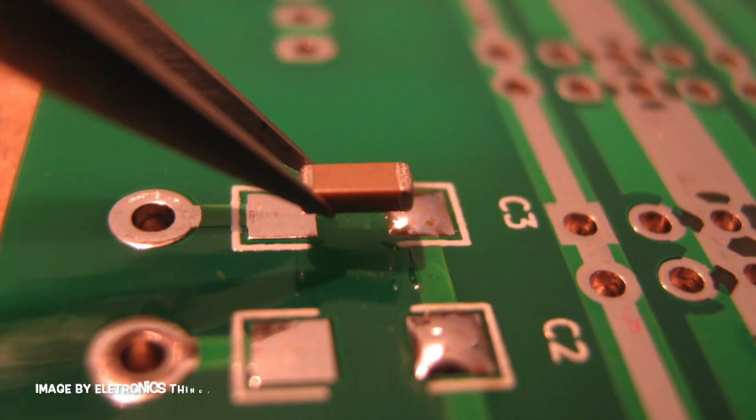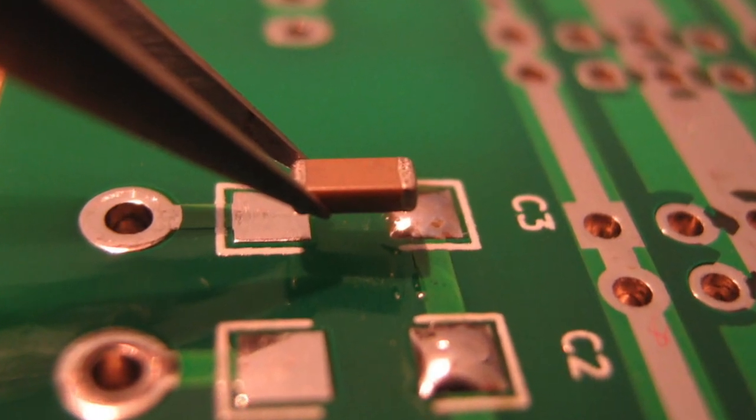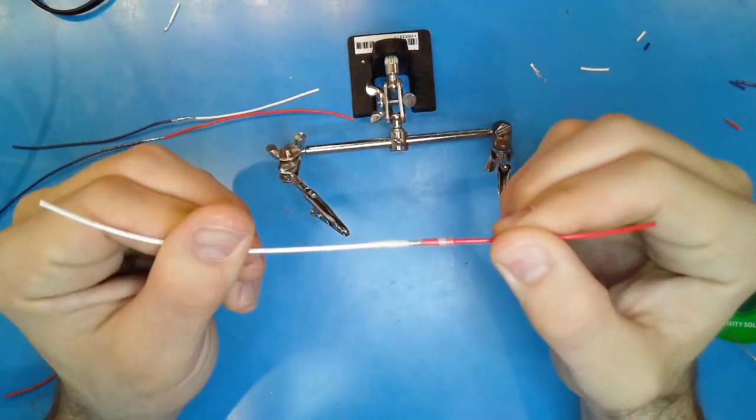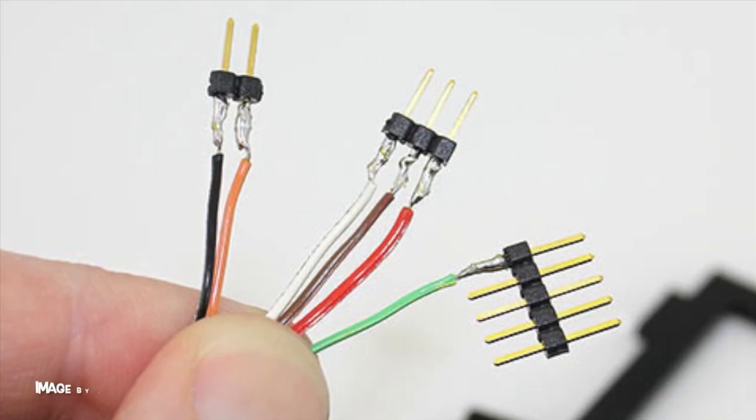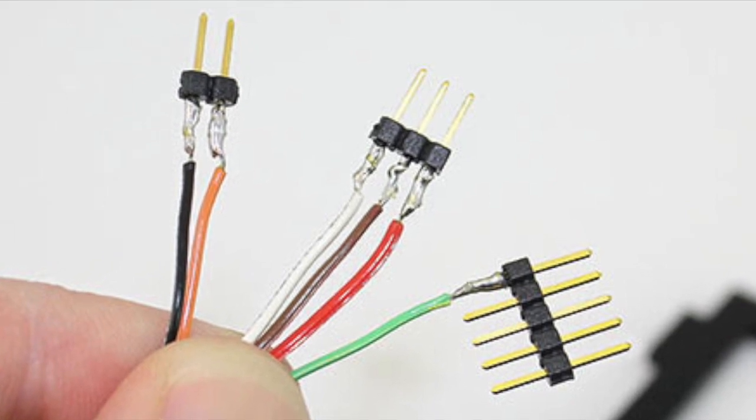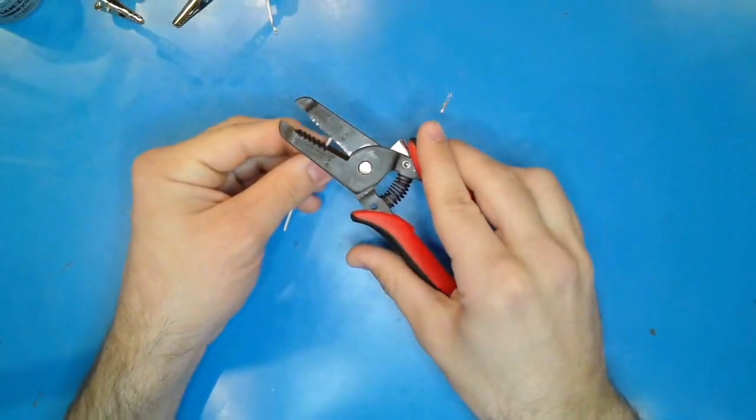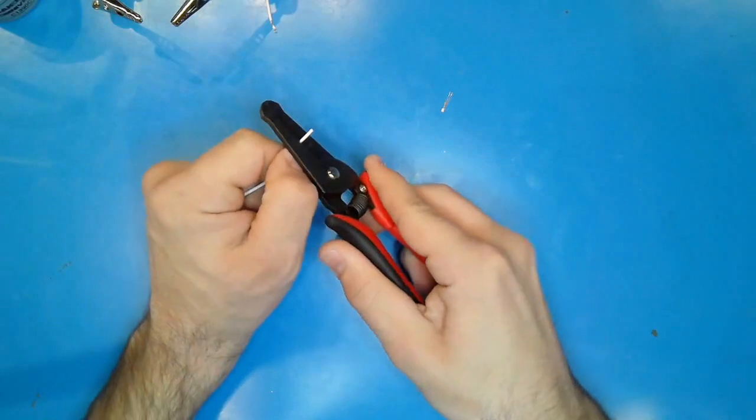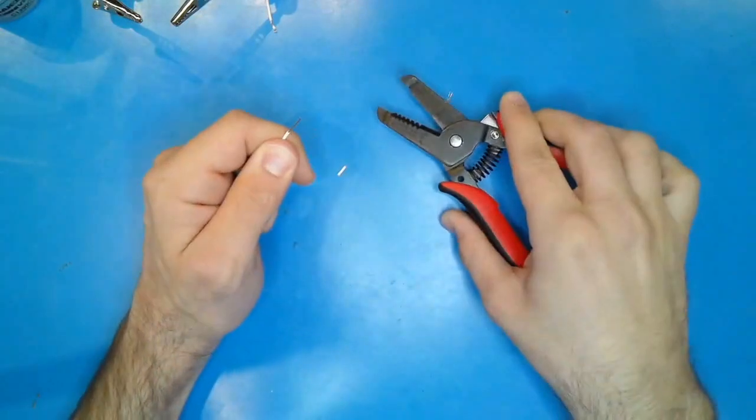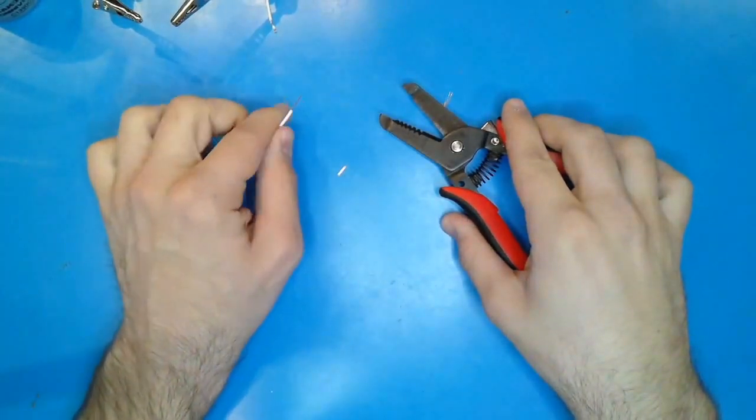Other soldering applications include surface mount components, wire-to-wire connections, and wire-to-lead connections. For wire-to-wire connections, you have a few options. But before you solder, make sure you have enough of the wire itself exposed to work with.